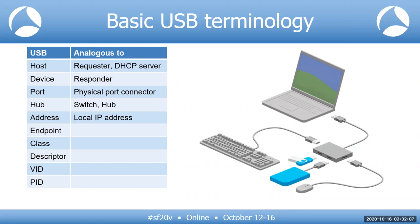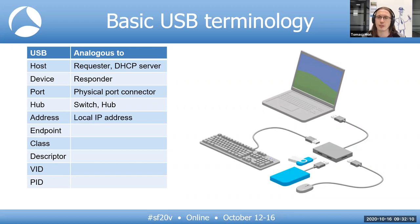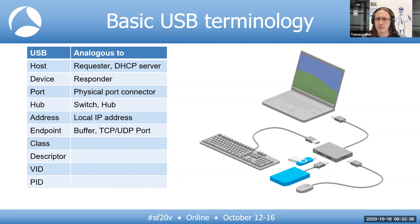In order for communication to work, every device needs its address. The address is similar to a local IP address except the range is much smaller. After reset, the device defaults to address 0, and then the host sets the device address to a value from 1 to 127. An endpoint is essentially a buffer — from an addressing point of view, it can be seen as an analogy to a TCP or UDP port. Each endpoint operates using one of the four available transfer types.